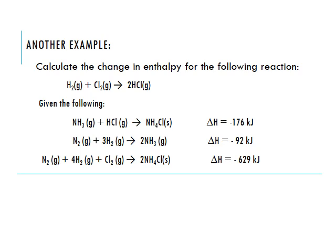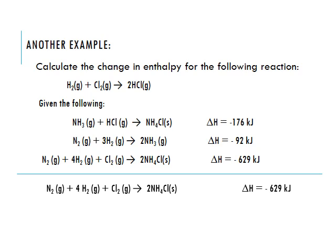Breaking this into steps — first we look for hydrogen, but it appears in both the second and third reactions. Since it's in multiple places, we hold off on hydrogen and look for chlorine first. The only reaction containing Cl₂ is the third reaction. The Cl₂ is on the correct side as a reactant with the correct coefficient, so we simply recopy that third reaction and leave its delta H value unchanged. We put a box around the chlorine gas.